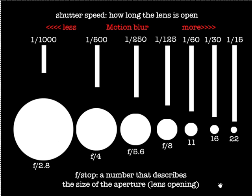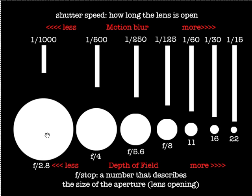Now, with f-stop, the thing that we control is the depth of field. As we go to a bigger opening, which is a smaller f-number, we get less depth of field — that area that we focused on gets to be a narrower area. If we go to smaller apertures, which would be a larger f-number, we are increasing the depth of field.